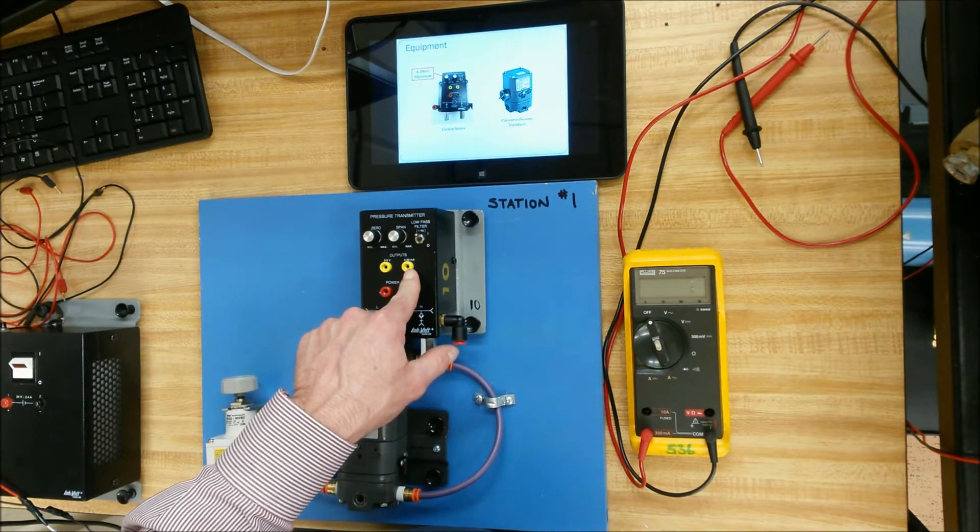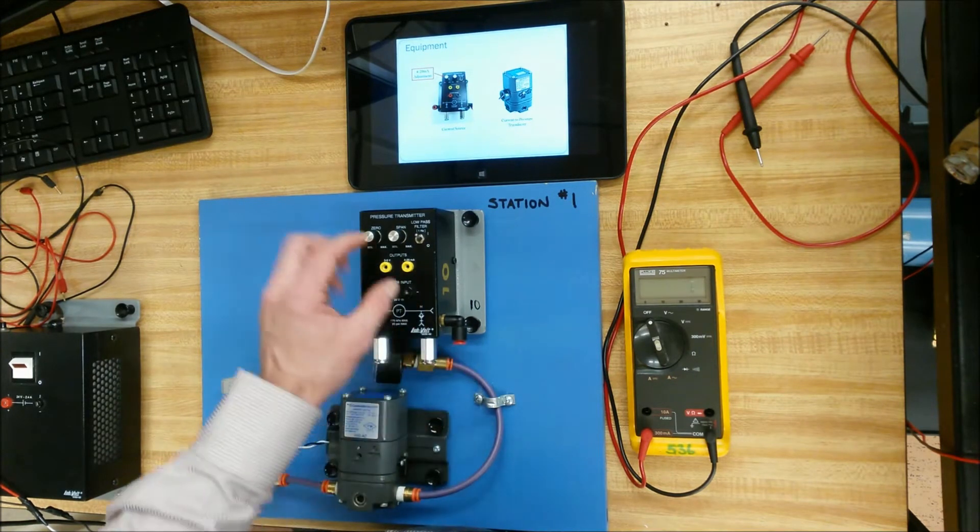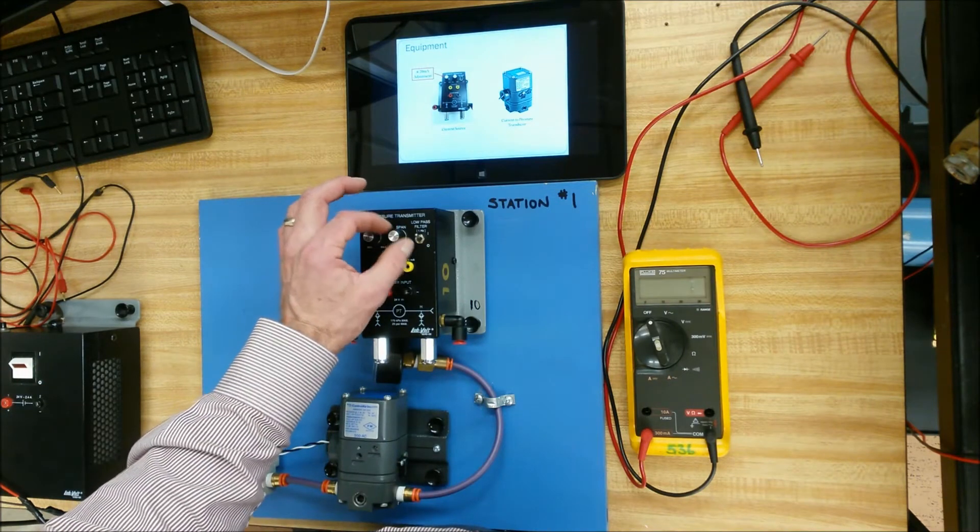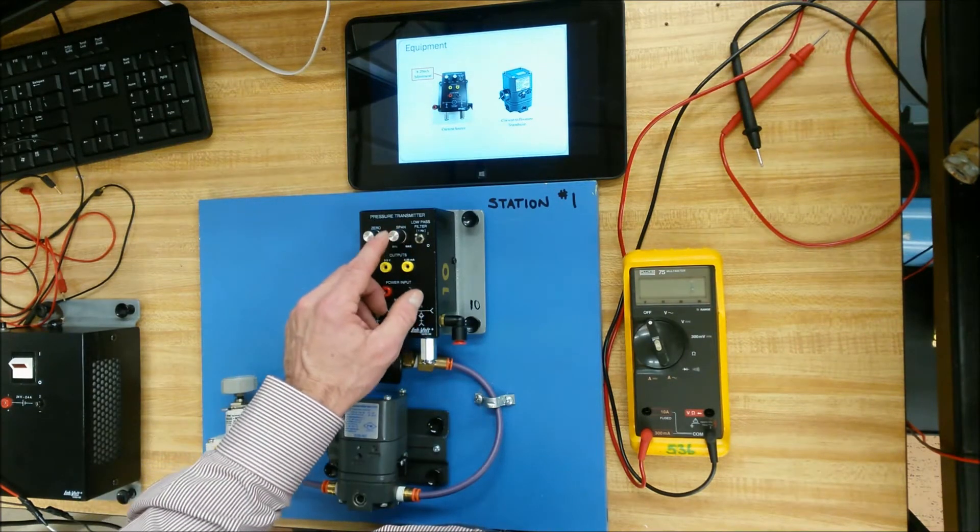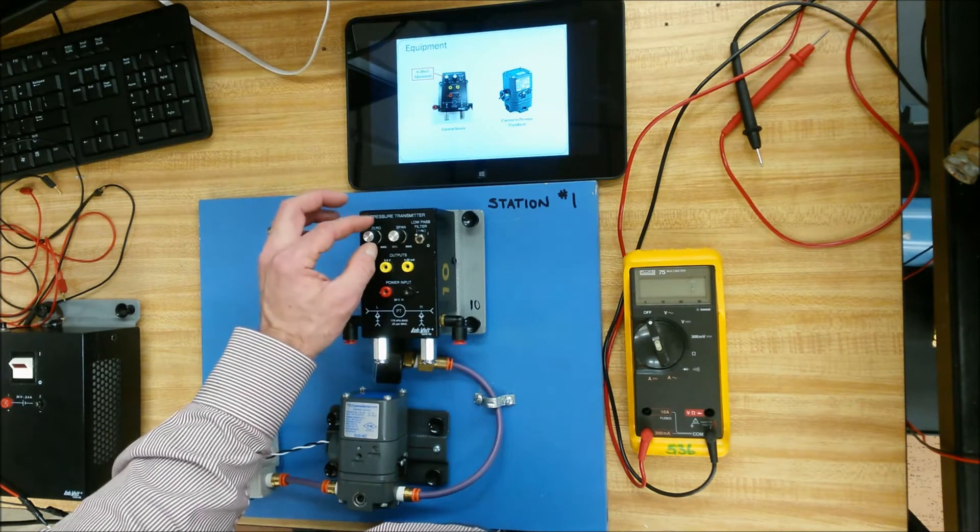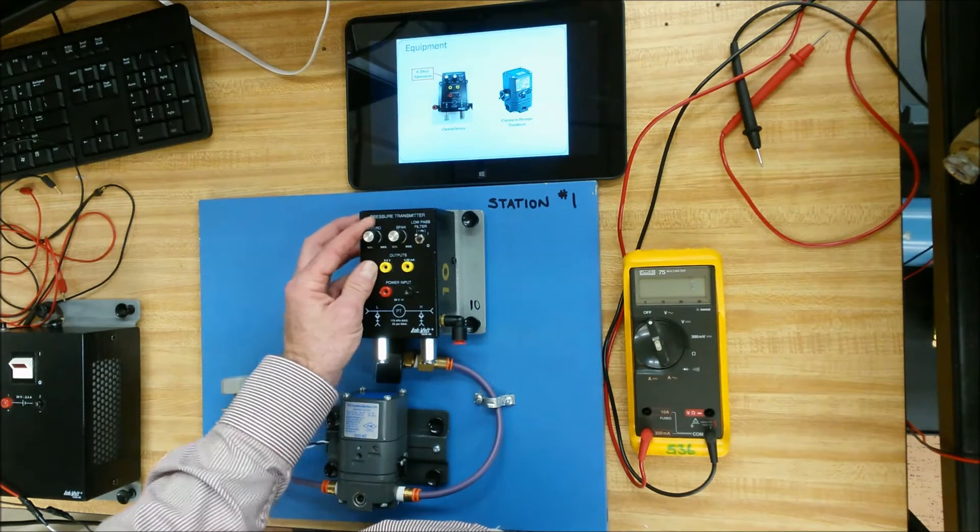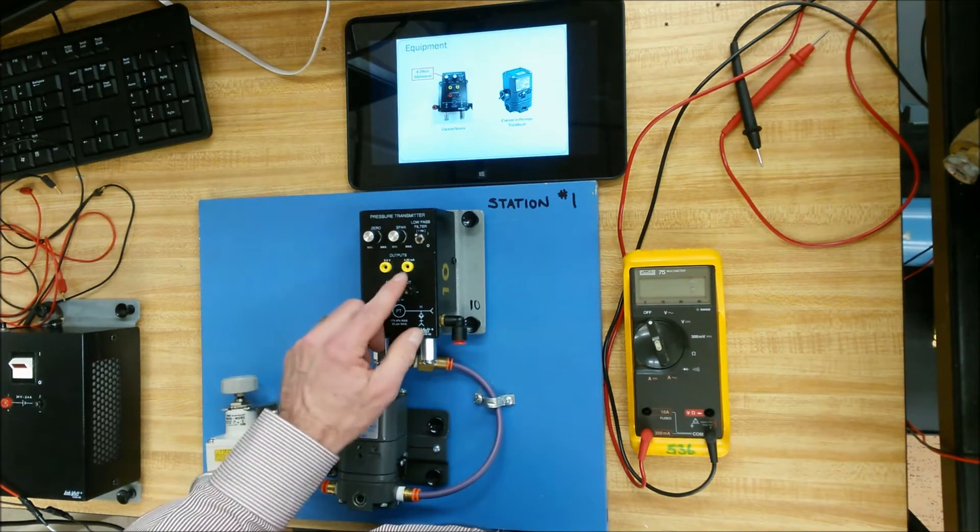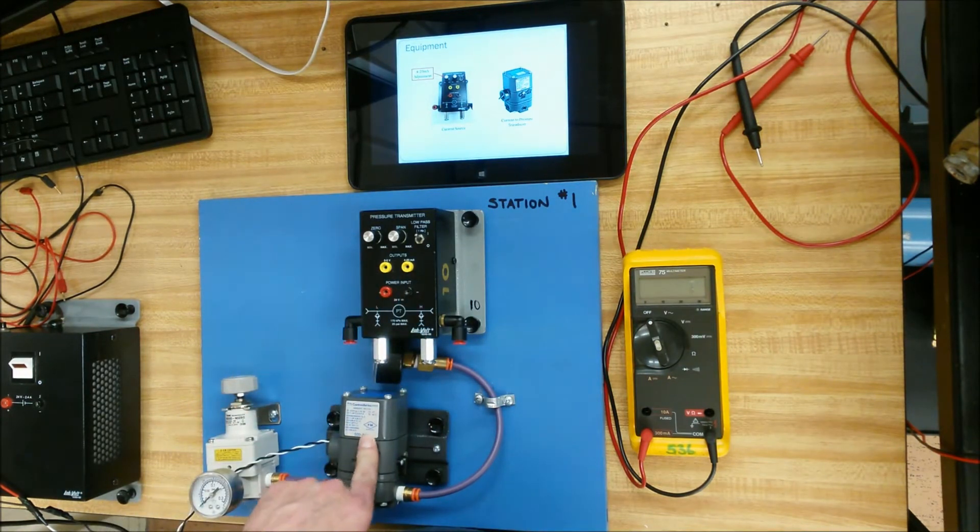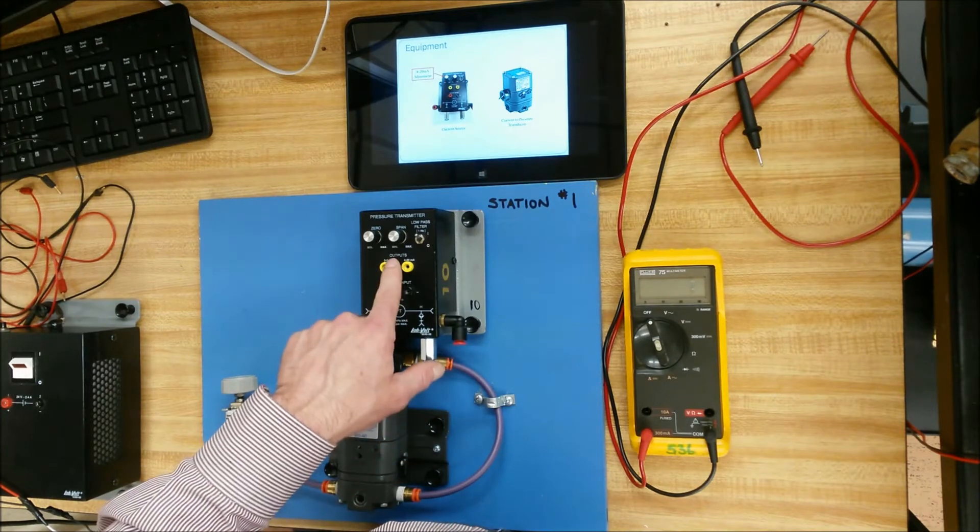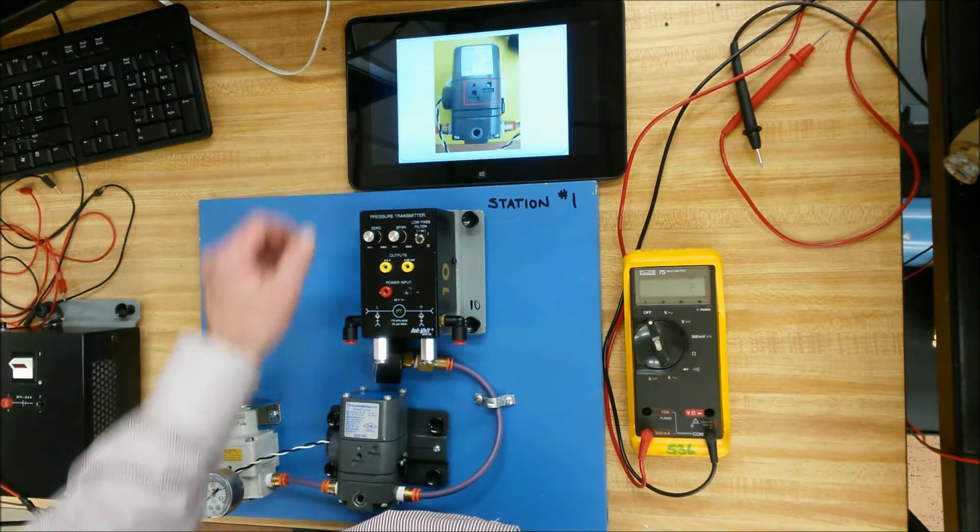You'll notice that this guy has 4 to 20 milliamps that will punch out. So what we're going to do is turn the span knob completely clockwise, and that will allow the zero knob to be used from 4 to 20 milliamps output. We're going to use that current and push it into this coil here. So this is only going to be used for a current source today.